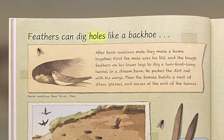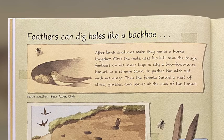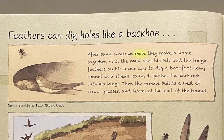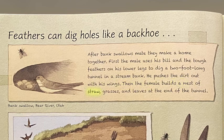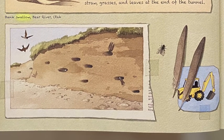Feathers can dig holes like a backhoe. After bank swallows mate, they make a home together. First, the male uses his bill and the tough feathers on his lower legs to dig a two-foot-long tunnel in a stream bank, pushing the dirt out with his wings. Then the female builds a nest of straw, grasses, and leaves at the end of the tunnel.